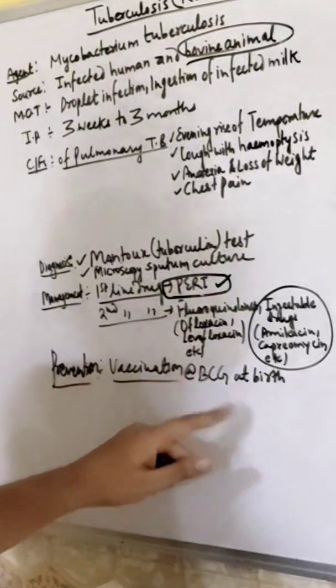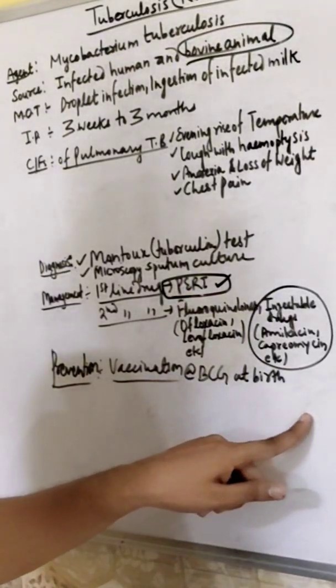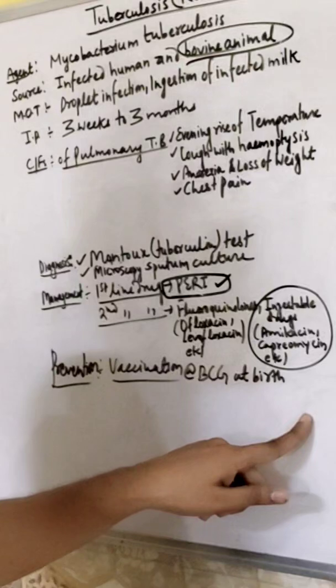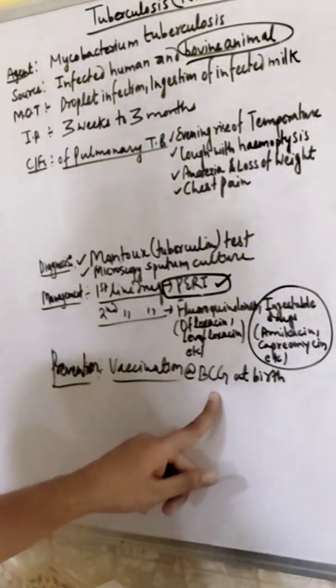And prevention, vaccination, which is given under routine immunization program, Government of Nepal, National Immunization Program. BCG at birth time. Thank you so much.